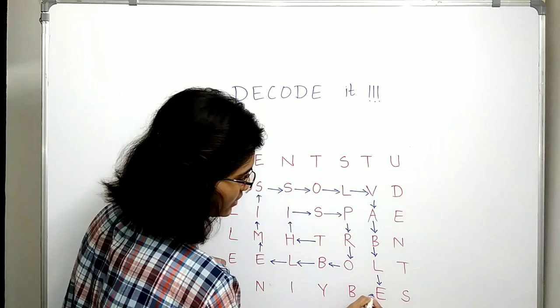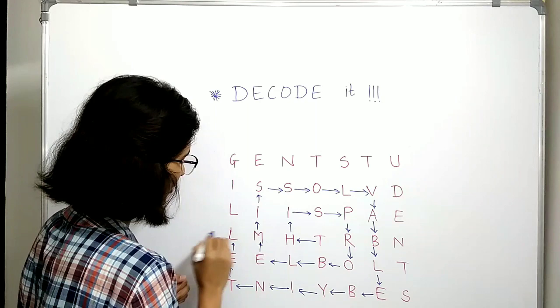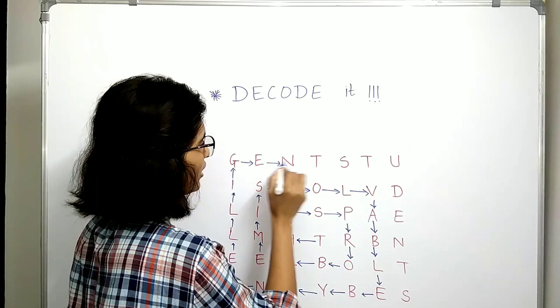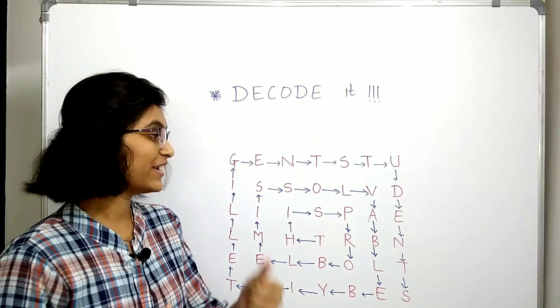So we have the word 'by'. Now the next is I-N-T-E, then L-L-I-G-E-N and T. So we have the word 'intelligent'.